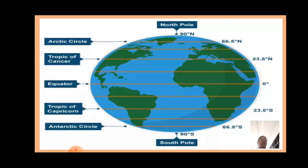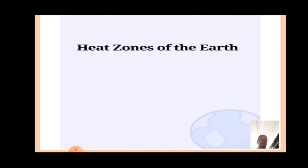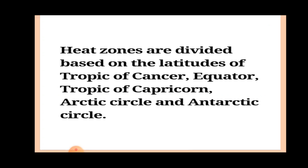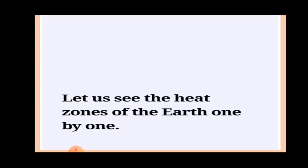The sun rays do not fall equally on all parts of the Earth because it is spherical in shape. They fall vertically over the equator and slantingly towards the poles, so all places on Earth do not have the same temperature. Based on the amount of heat received from the sun, the lines of latitude help in dividing the Earth into different climatic zones. Heat zones are divided as torrid, temperate, and frigid zone, based on the latitudes of the Tropic of Cancer, equator, Tropic of Capricorn, Arctic Circle, and Antarctic Circle.